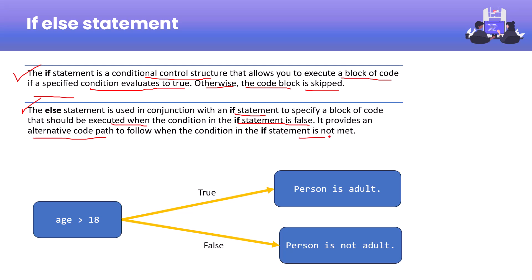It provides an alternative code path to follow when the condition in the if statement is not met. For example, if the age of a person is greater than 18 and if it is true, it will execute the block that says the person is adult. If the condition is false, it will go to another block and execute the code that says this person is not adult. Let's see how you can achieve this using code.